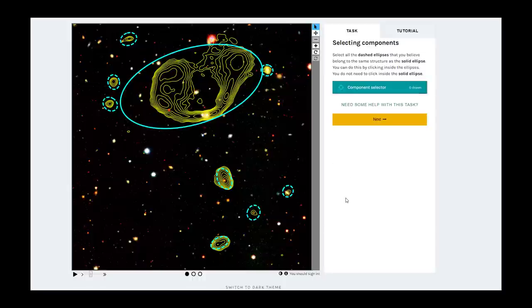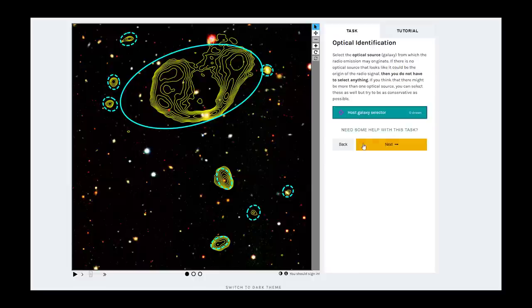The source can also still be quite symmetric, but the radio jets might be bent because the black hole is moving through space very fast. In this case, the solid ellipse correctly encompasses the entire source, so we do not have to click any dashed ellipses. The optical source is again found in the middle of the radio source.